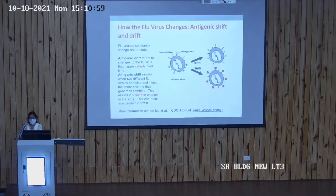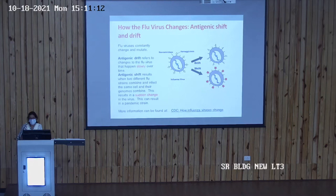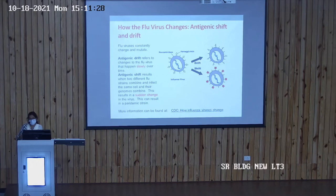Flu viruses constantly change and mutate through two processes: antigenic drift and antigenic shift. Antigenic drift refers to changes to the flu virus that happen slowly and gradually over time. This can be asked as a short note on mutation of influenza virus — the drift is a slow, gradual change.